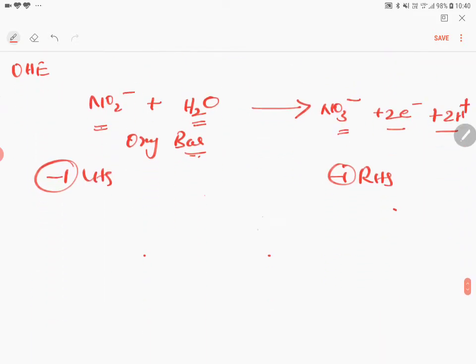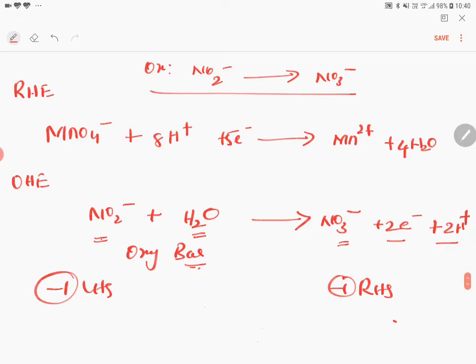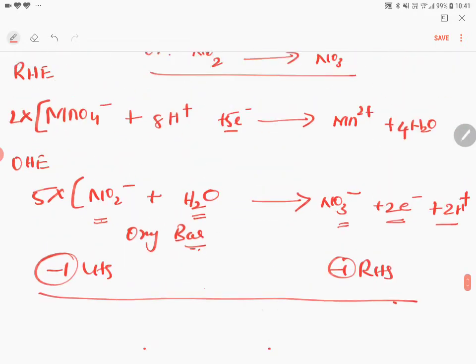Now what you should do. Here once again, odd even. So multiply this equation by 2, multiply this equation by 5, and write the entire equation. You will get the answer.